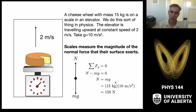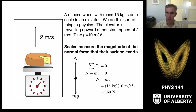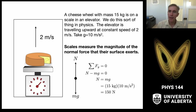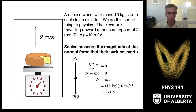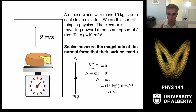So that's 150 newtons. That tells us how hard the scale is pushing upward on the cheese. But I wanted to know what the scale reads. This comes to a model we use in physics: scales measure the magnitude of the normal force that their surface exerts. So the scale reads N — whatever normal force the scale is pushing up on the object, that's what it reads.